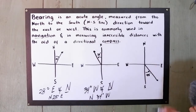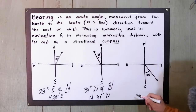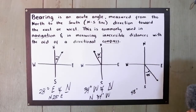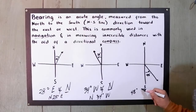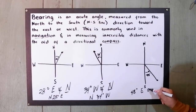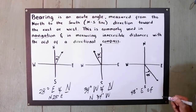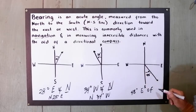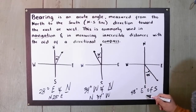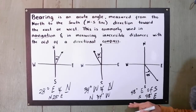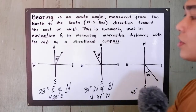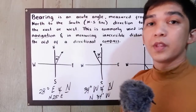And last, we have 48 degrees. That is on the south side, so it is read as 48 degrees east of south. That is how to read the bearing.